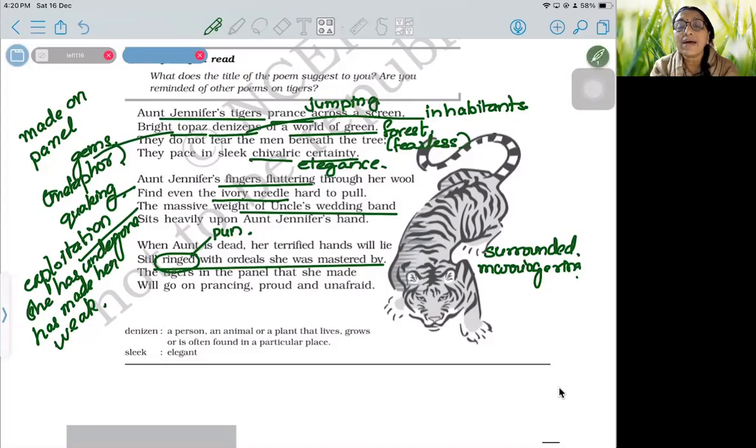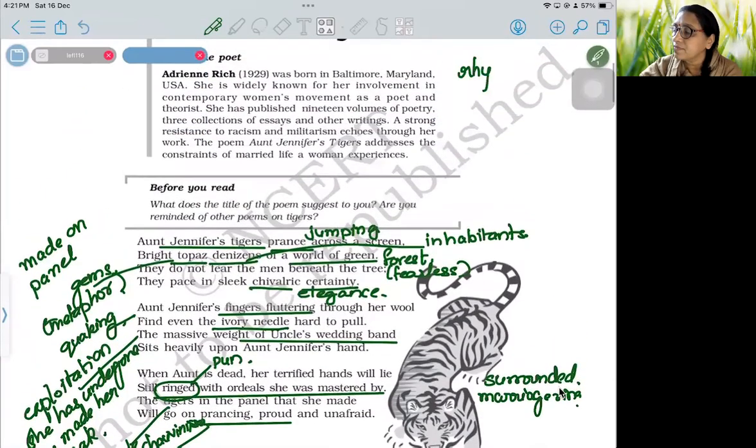The tigers in the panel that she made will go on prancing, proud and unafraid. The tigers here are representing male chauvinism. That would always be there, that would continue. Male domination would continue even if a female is dead. This is the poem Aunt Jennifer's Tigers. The rhyme scheme, if you see, is AABB: screen-green, tree-certainty, wool-pull, band-hand.